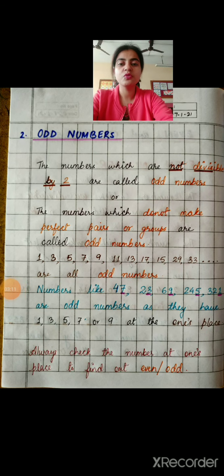Now, let's move on to odd numbers. The numbers which are not divisible by 2 are called odd numbers or the numbers which do not make perfect pairs or groups are called odd numbers. So, the odd numbers are totally opposite of even.